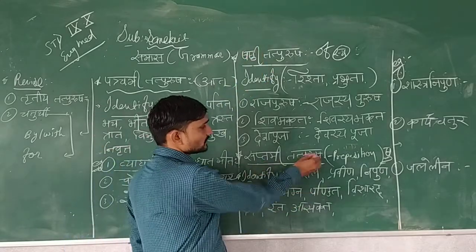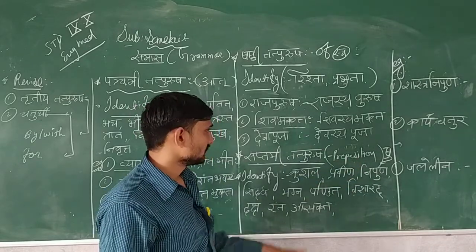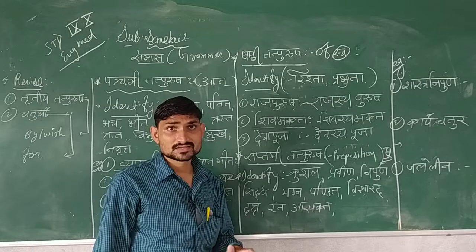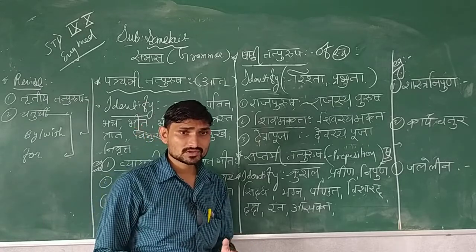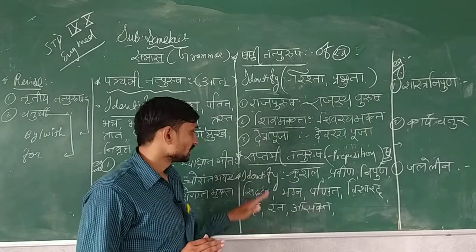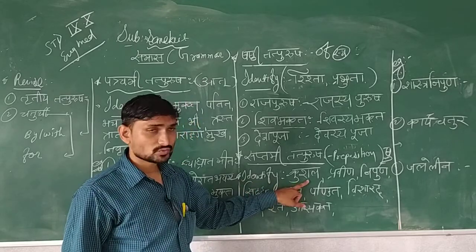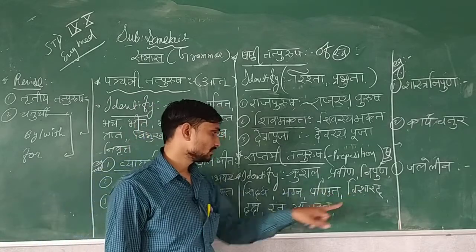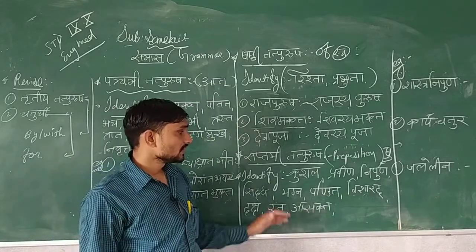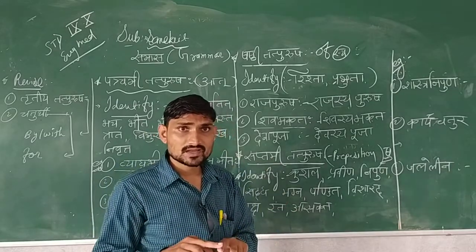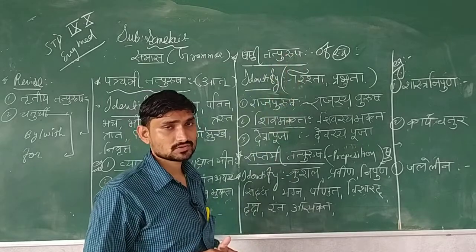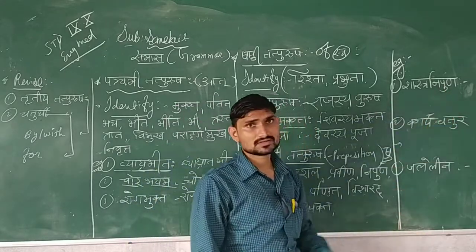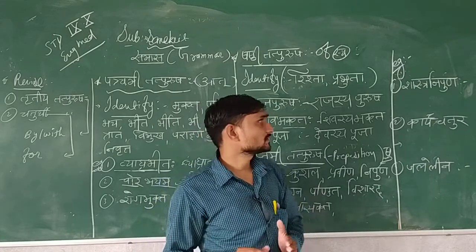I have written three examples here. For example, Shastranipurna — you can see the word Nipurna here. Nipurna is in the identity list, so it is known as Saptami Tatpurusha. If someone says to split it, you use the preposition belonging to the Shu (seventh) case form: Shastrashu Nipurna. Next, Kariyachaturya — write Kariya, then add Shu: Kariyashu Chaturya.